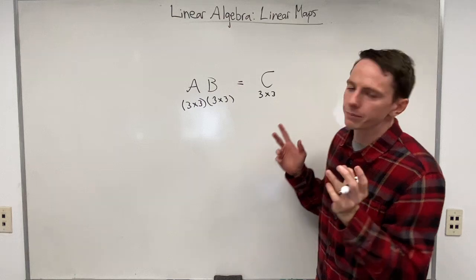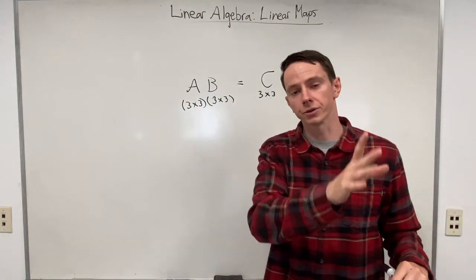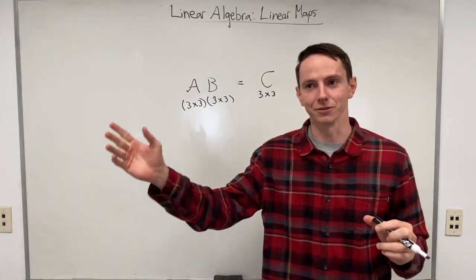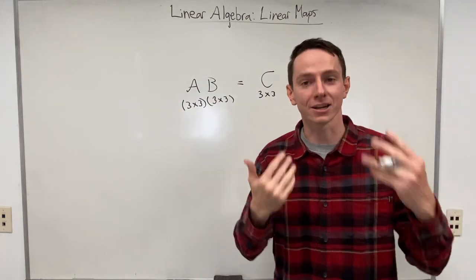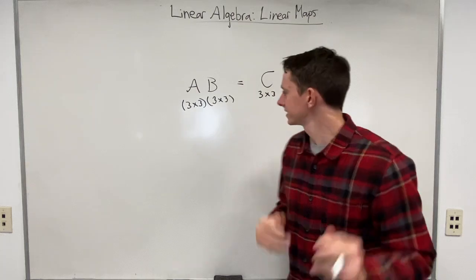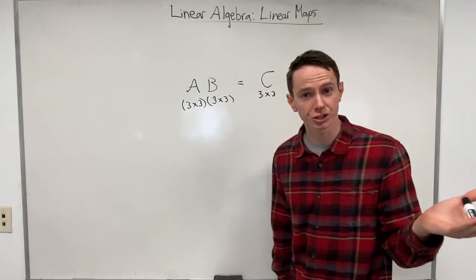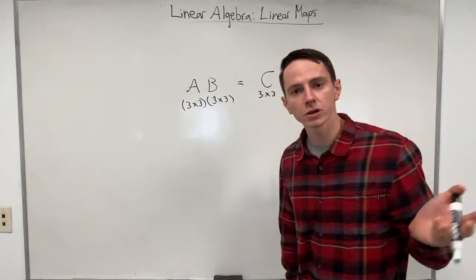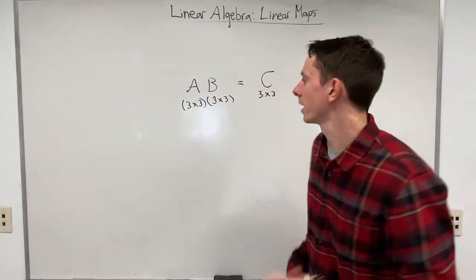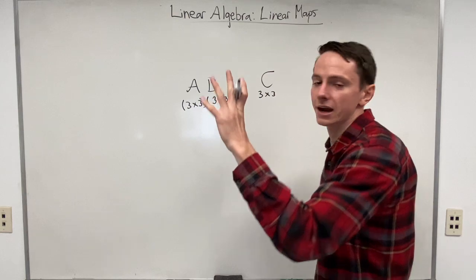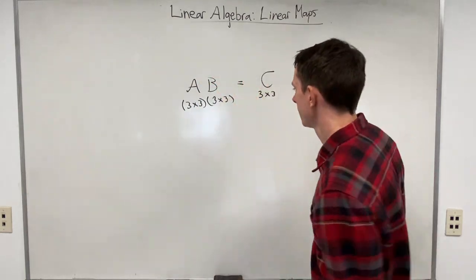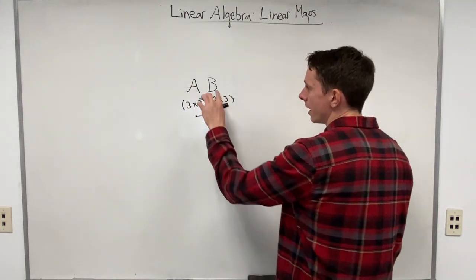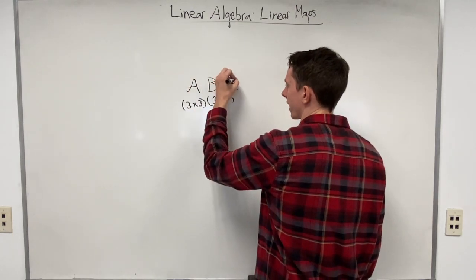We should keep in mind that matrices are functions that map from one vector space to another. We're primarily interested in functions to see how they act on elements of a vector space — how they act on a vector. Typically we can be interested in matrices for their own right, but oftentimes we want to take a matrix and multiply or act it on a vector, just like acting a function on an element of a set. So let's suppose we actually do that — we have a product of two matrices acting on a vector x.